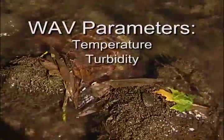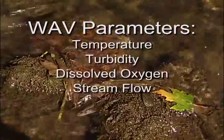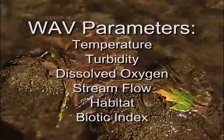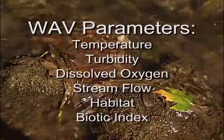There are six parameters that are monitored in the WAVE program: temperature, turbidity, dissolved oxygen, stream flow, habitat, and biotic index. Prior to WAVE's stream monitoring program, there were a variety of methods used by people across the state to do citizen stream monitoring. WAVE's program was designed to provide consistency across the state, to well represent stream health over time, and to be easy to measure.